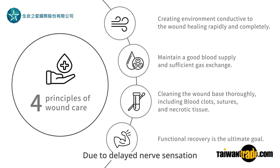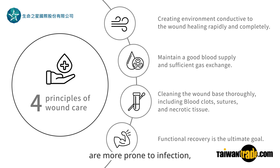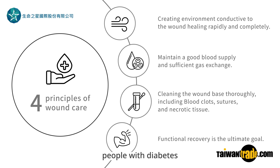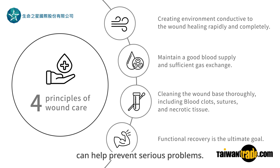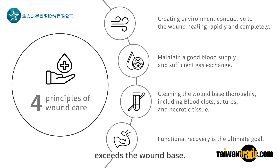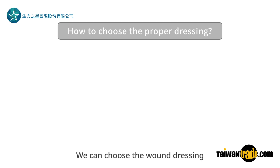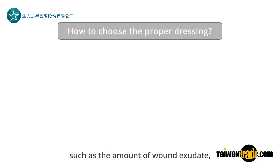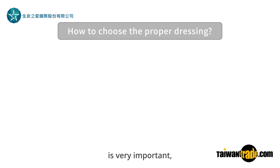Due to delayed nerve sensation and circulatory disorders, diabetic patients are more prone to infection, gangrene, and amputation of their feet. People with diabetes having their feet checked each day can help prevent serious problems. The wound dressing should be changed when the absorption capacity of the dressing is exceeded. The correct selection of proper dressing according to wound type and the amount of wound exudate is very important and conducive to wound healing.